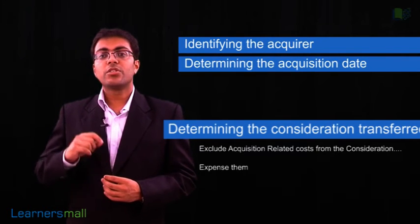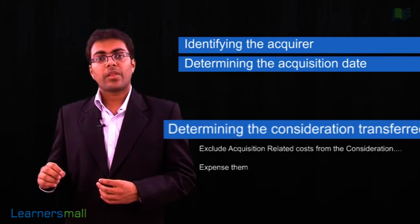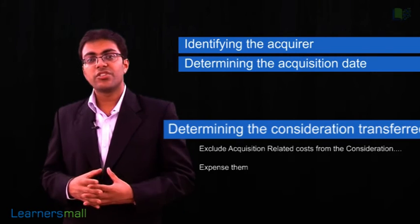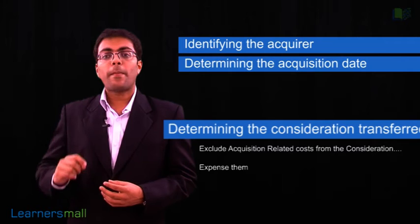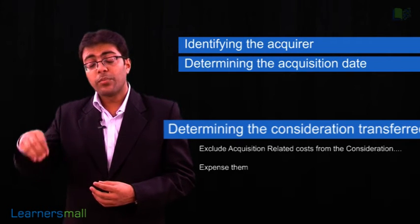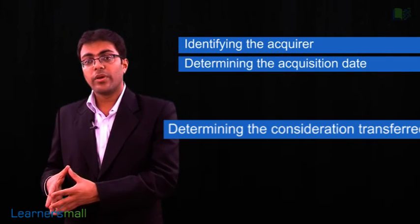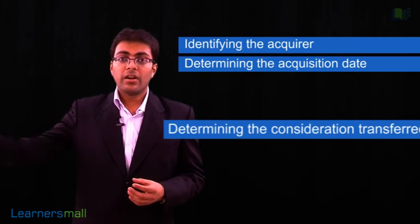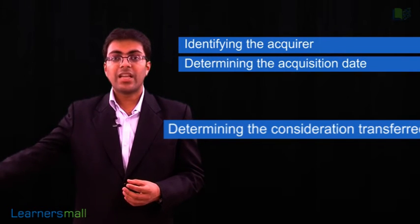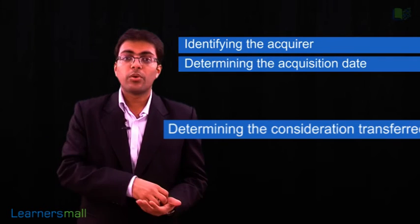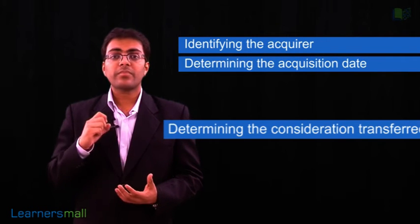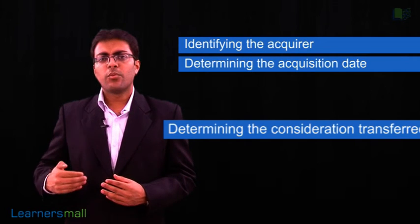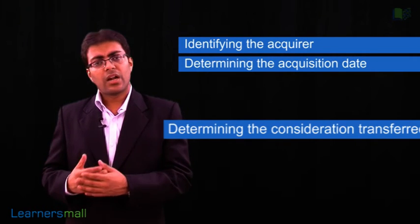Also, amounts which are not part of the combination are accounted for separately. For example, any pre-existing relationships, or any amount paid to current employees who were former owners of the acquired entity — if former owners have become your employees and you pay amounts to them, this would not form part of the consideration transferred.